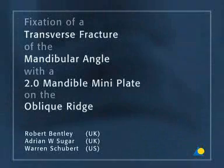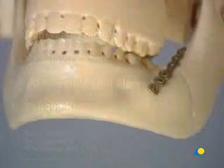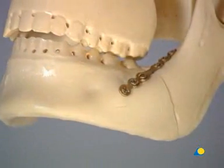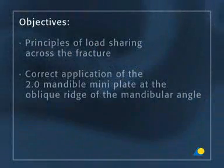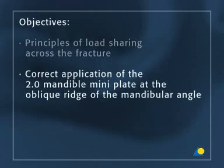A transverse fracture of the mandibular angle is treated with a 2.0 mandible mini plate positioned on the oblique ridge, as described by Champy. The objectives of this exercise are to understand the principles of load sharing across the fracture and the correct application of the 2.0 mandible mini plate at the oblique ridge of the mandibular angle.